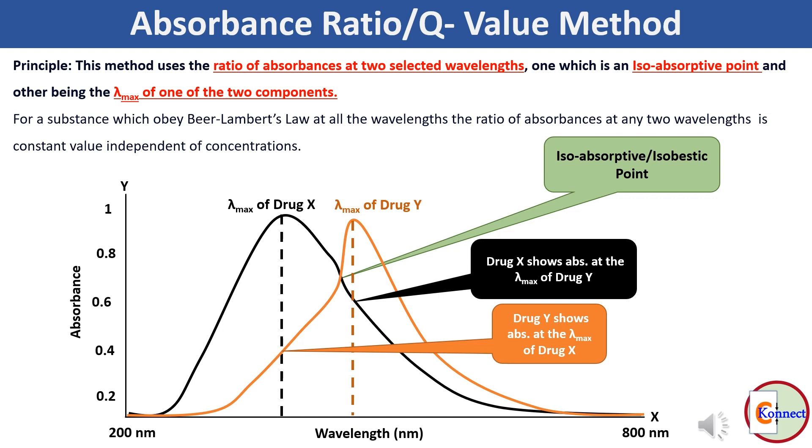With this condition, we can state the principle of absorbance ratio method as: for substances which obey Beer-Lambert's law at all wavelengths, the ratio of absorbances at any two wavelengths is a constant value independent of concentration.